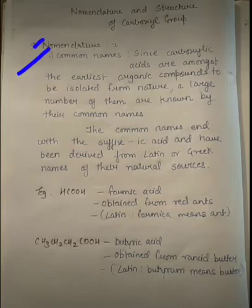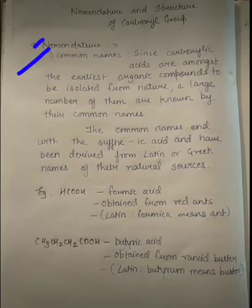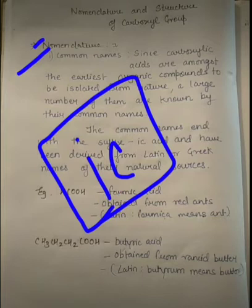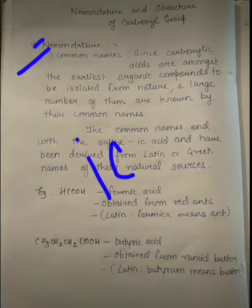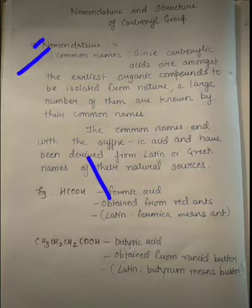Common names use the suffix 'ic acid'. If you look at any common name, at the end you will see the word 'ic acid'. For example, formic acid — at the end you can see 'ic'. Another example is butyric acid — at its end also you can see 'ic'. So all common names of carboxylic acids end with the suffix 'ic acid'.